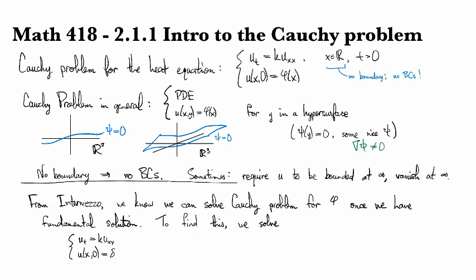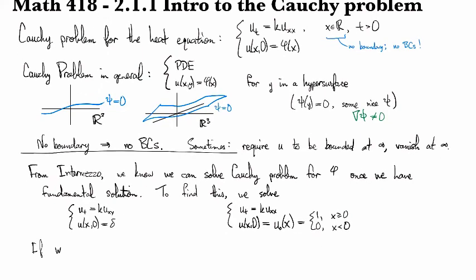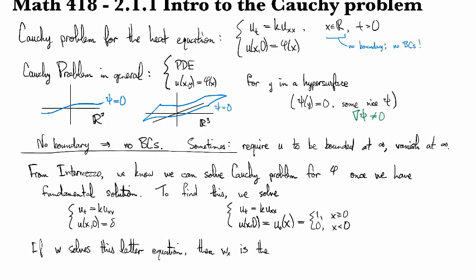subject to u of x zero being the Dirac delta at zero. And to find this, we can solve the heat equation with u of x zero being the unit step function where the cutoff is at zero. So u zero of x, this is the Heaviside or unit step function where the jump is at zero. And the reason why it works is because if w solves this latter equation,